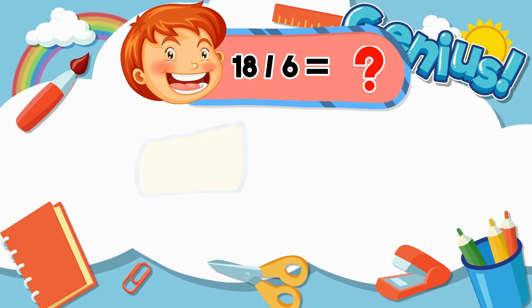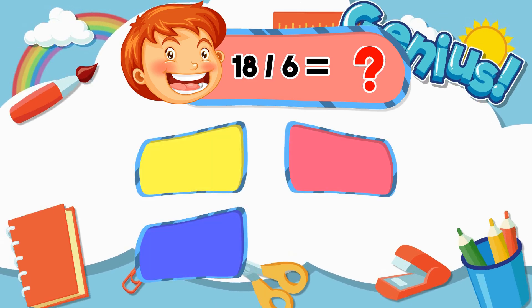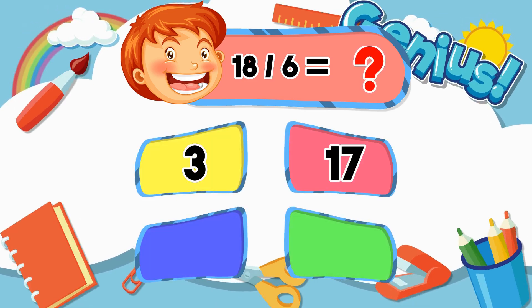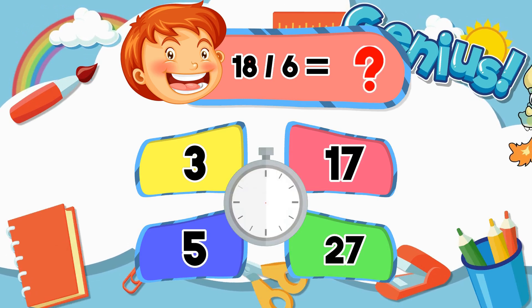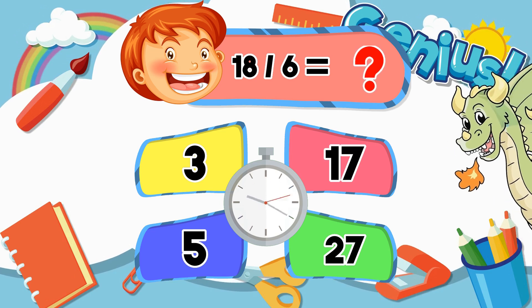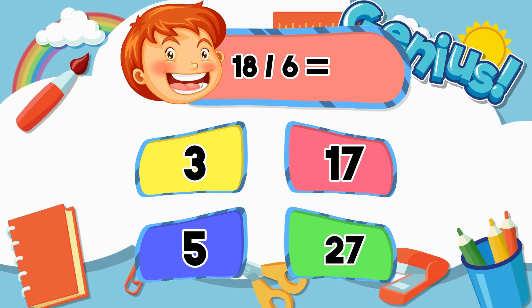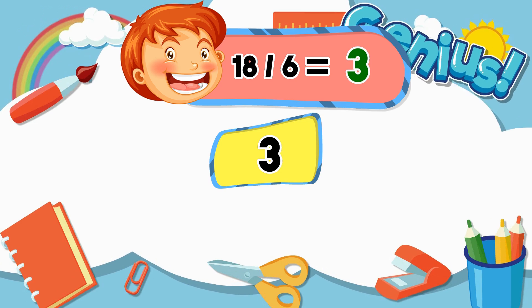What is 18 divided by 6? Options: three, seventeen, five, twenty-seven. Answer: three.